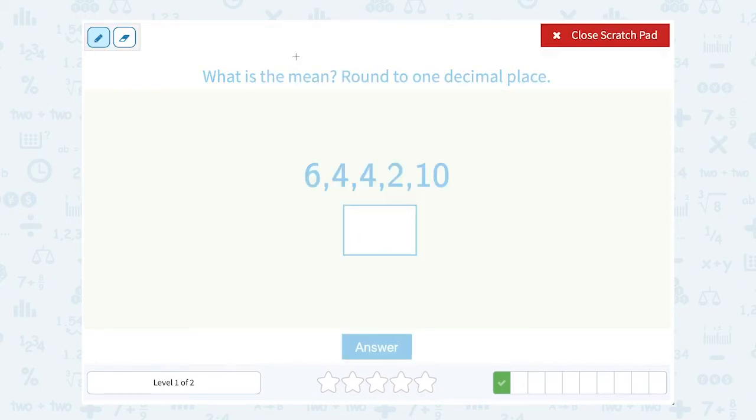So again we're going to find the mean. This time our numbers are 6, 4, 4, 2, and 10. Well, you always add them up and divide by how many numbers there are in your set. So 6 plus 4 plus 4 plus 2 plus 10.